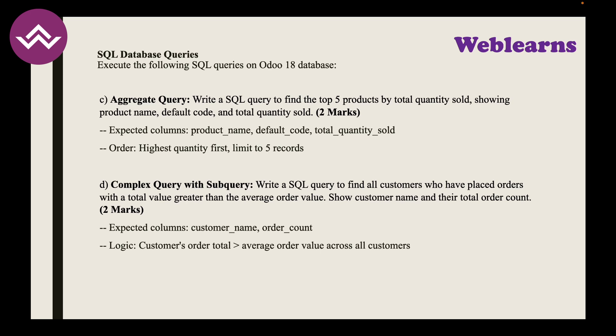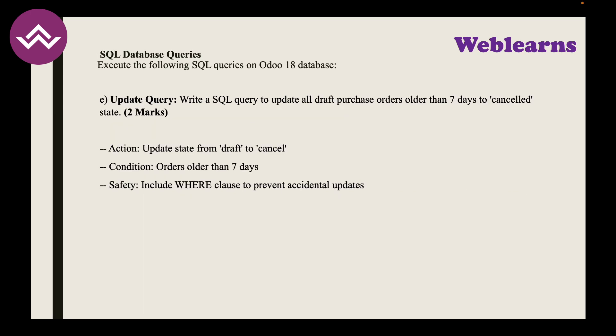SQL Task 5 — Update Query: Write a SQL query to update all draft purchase orders older than seven days to cancelled status. The action is to update the state from 'draft' to 'cancel' for orders older than seven days. Each SQL query is worth two marks.